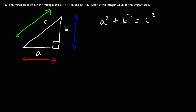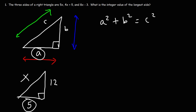Let's work on an example problem. Let's say that the hypotenuse is X, and the legs of the triangle are 5 and 12. What is the value of X? We can see that A is equal to 5, B is equal to 12, and C is equal to X.